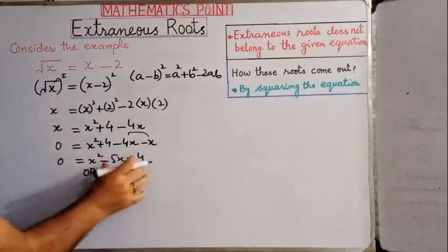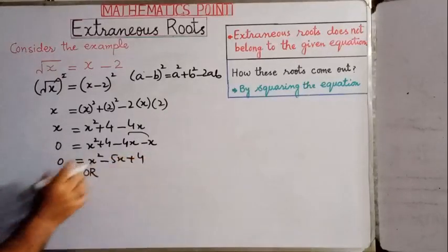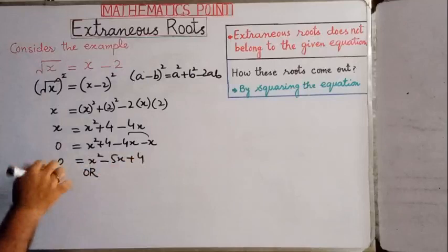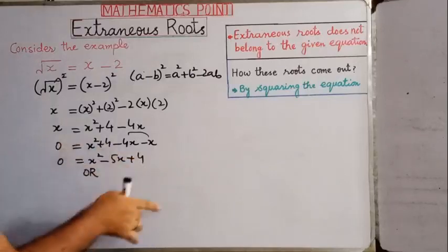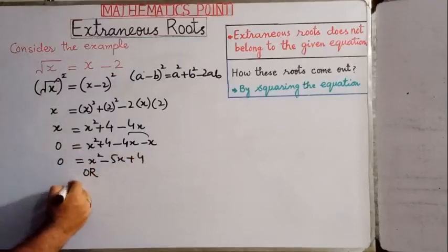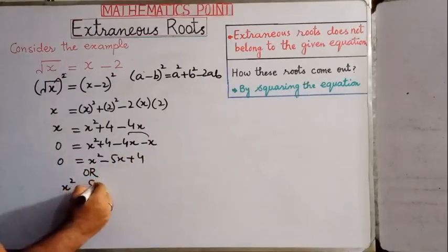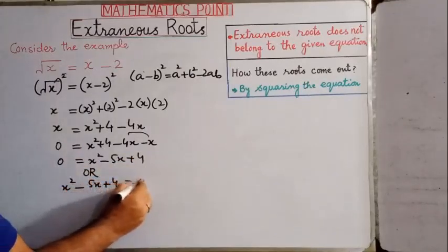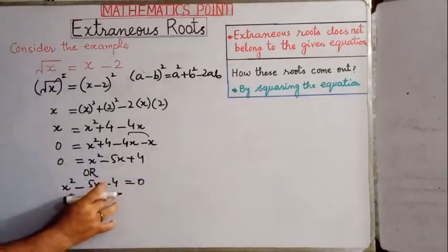Now we change sides — the right hand side becomes the left hand side and the 0 goes to the right hand side. So we have x square minus 5x plus 4 is equal to 0. Now factorize this quadratic equation.